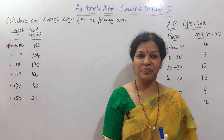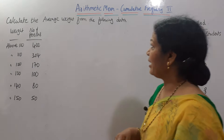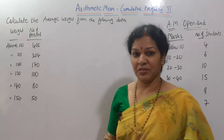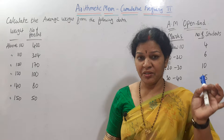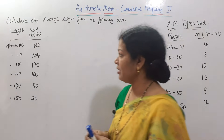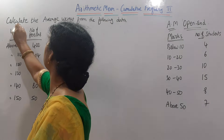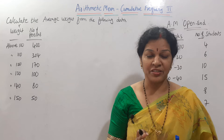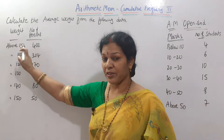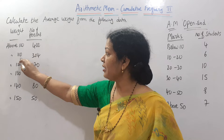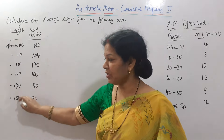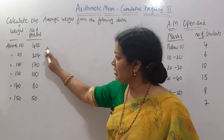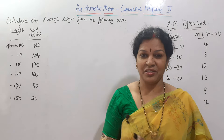The problem asks us to calculate the average weight from the following data. Weight is the class interval, that is X. When X is given as 'below' or 'above', you need to rearrange the class interval. Here it is given as 'above 100', 'above 110', 'above 120', 'above 130' — observe that the frequency is in descending order, so you have to rearrange the frequency as well.